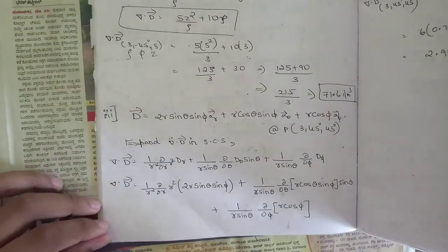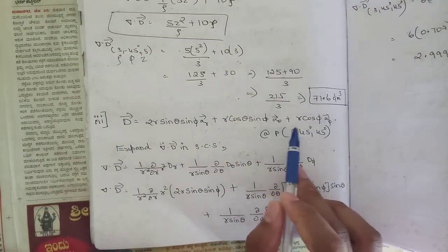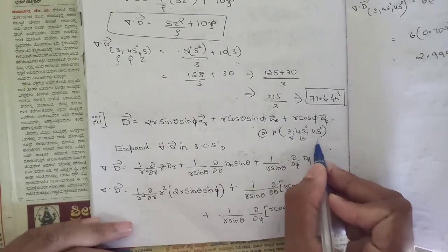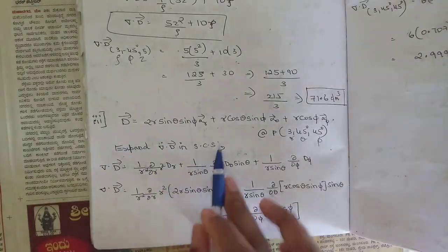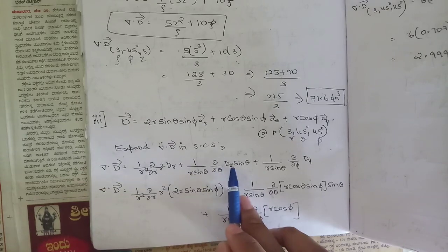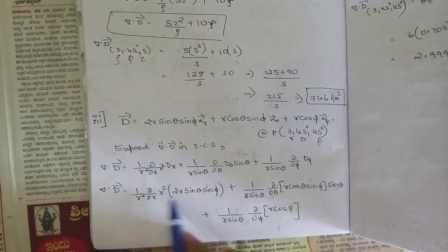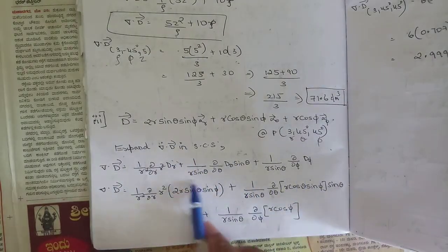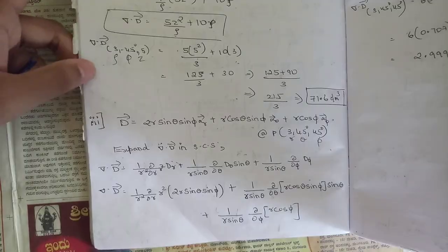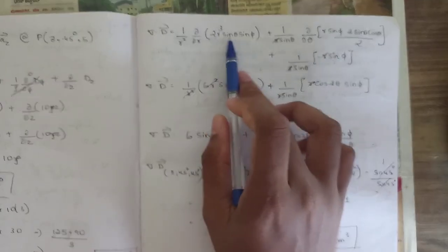The third sub-question is in spherical coordinates: D = 2r sinθ sinφ ar + r cosθ sinφ aθ + r cosφ aφ at P = (3, 45°, 45°). The del·D in spherical coordinates is (1/r²)∂/∂r(r²Dr) + (1/r sinθ)∂/∂θ(Dθ sinθ) + (1/r sinθ)∂/∂φ(Dφ). Substituting the components of Dr, Dθ, and Dφ accordingly.